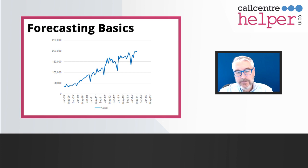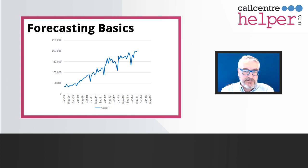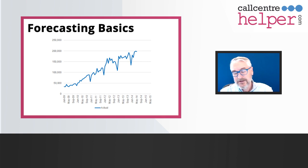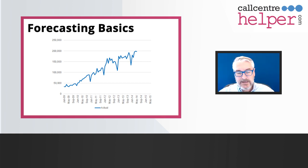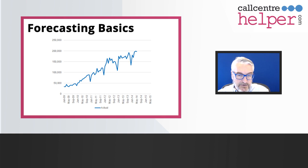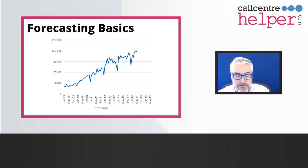I'd like to take you through some of the basics of forecasting. The best way to look at a forecast is to plot out the data over time — something that's called time series data in a contact center. Monthly information is quite good to look at. What you'll see here is an interesting pattern of data showing a trend line; you can see things going up over time. The trend seems reasonably consistent, though it does seem to accelerate a little towards the end.